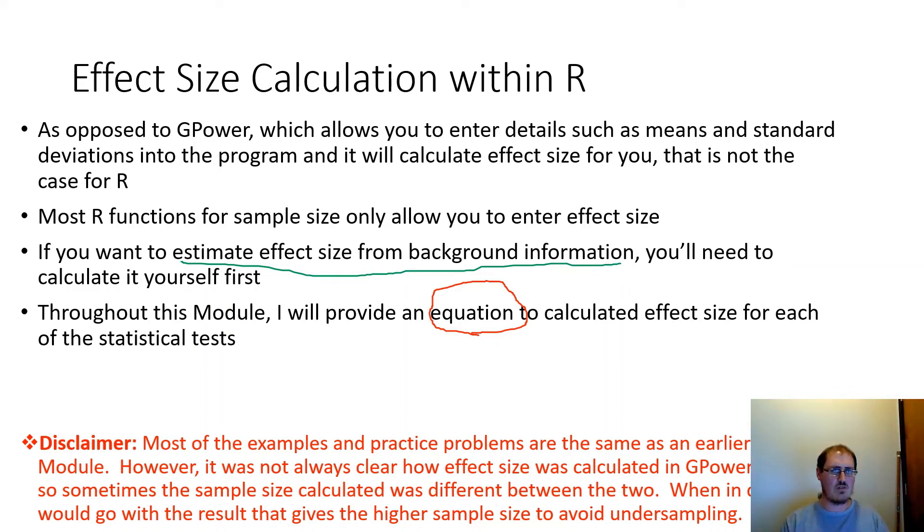So if you have that kind of issue where you're looking at one data set and two different programs are giving you two different answers, if you can't tell which one is right, I would go with the one that gives you the higher sample size just to be conservative, to make sure you don't go with one example software that gives you a lower sample size, but that's erroneous. So then you under detect when you do your actual experiment.